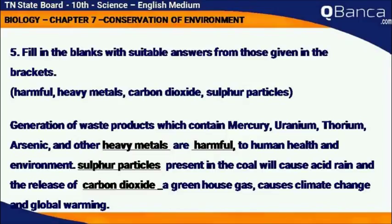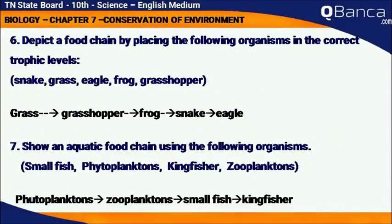Sulfur particles present in coal cause acid rain, and the release of carbon dioxide, a greenhouse gas, causes climate change and global warming. Depict a food chain by placing the following organisms in the correct trophic levels: Snake, Grass, Eagle, Frog, Grasshopper.